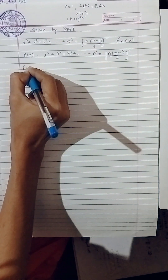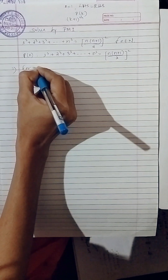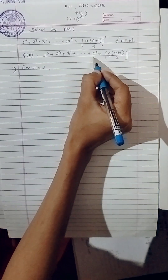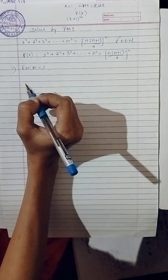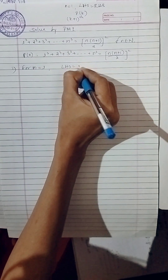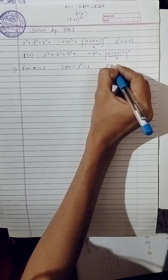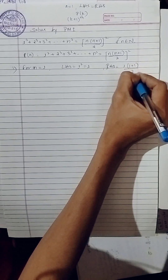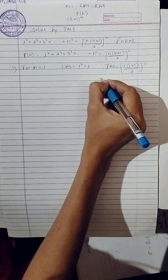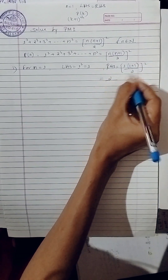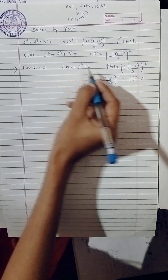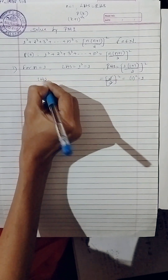First step: for n equal to one, we have to prove LHS equal to RHS. LHS: one cube equals one. For RHS, substitute n equals one: one into one plus one divided by two, whole square. Simplify: one plus one is two, two divided by two whole square, twos cancel, leaving one squared equals one. Therefore LHS equals RHS.